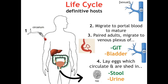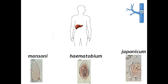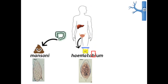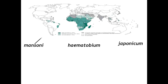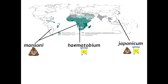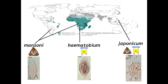After maturing in the portal system, paired adults migrate to their final homes. Mansoni migrates to the mesenteric veins — M for Mansoni, M for mesenteric — and its eggs are found in stool. Haematobium resides in the venous plexus of the bladder — the only one with a 'b' in its name — and its eggs are found in urine. Japonicum can be found in either location. Each species colonizes veins, feeds on erythrocytes, and produces eggs; the only distinguishing features between species are their epidemiology and egg morphology.